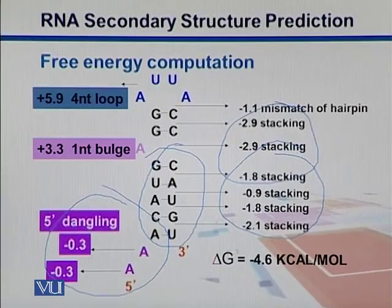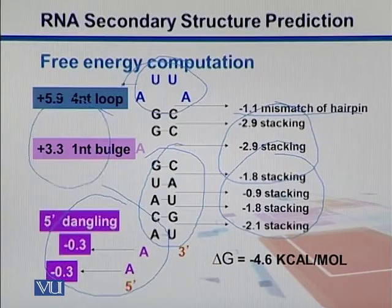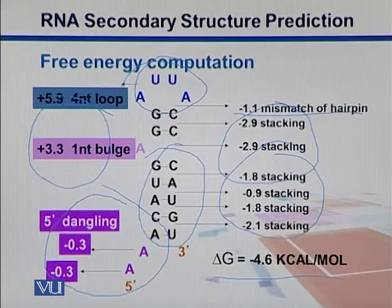Mismatches also have somewhat lower energy, but not as much lower. Loops and bulges raise the energy of the system and cause instability. The overall delta G for this molecule is negative 4.6. In this way we can come up with different structures, calculate their energies, and the structure with the lowest overall energy will be the most likely structure.